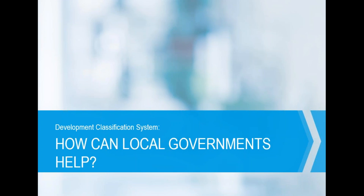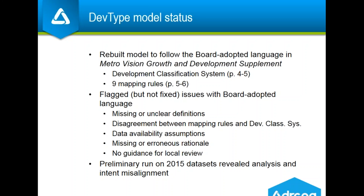This is where we ask for your help. The dev type model is in better shape than it ever has been — DRCOG staff have gone back to make sure that the dev type model is following the board-adopted language, fulfilling both the development classification system and the nine mapping rules meant to implement that system. But that process has revealed some significant issues with the actual language that the board adopted. There are sometimes missing or unclear definitions — humans might handle such imprecision, but computer models do not.